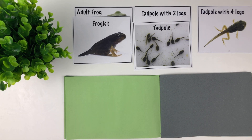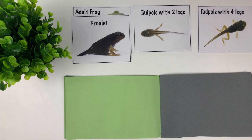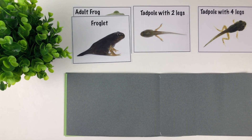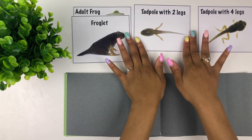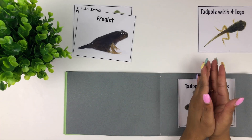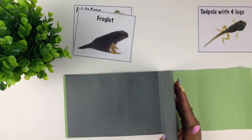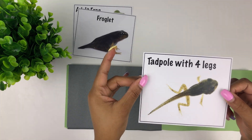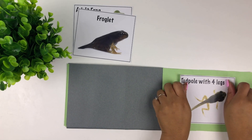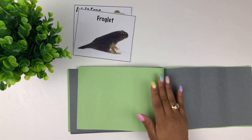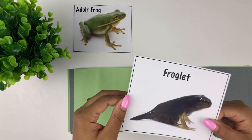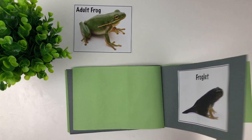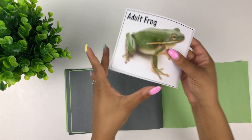The third stage is tadpole. The fourth stage is tadpole with two legs. The fifth stage is tadpole with four legs. The sixth stage is froglet.